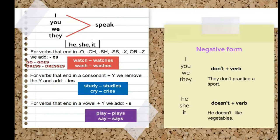When you have a verb that ends in a consonant and then Y — for example, study — you change the Y for I and add E-S, so it becomes studies. Pay attention: play doesn't have a consonant before Y, it has a vowel. This consonant-plus-Y rule only applies when there is a consonant before the Y.